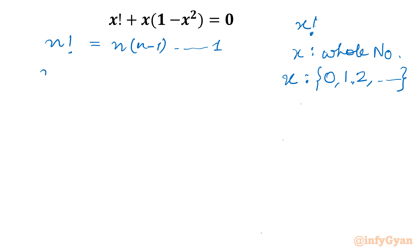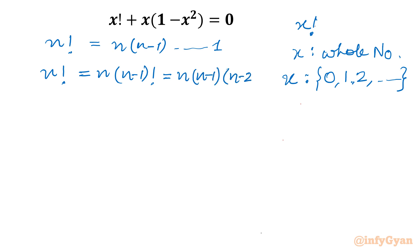Factorial notation means we multiply all the numbers from 1 up to that particular number — their product is called factorial. Now the recursive formula: n times (n minus 1) factorial, or n times (n minus 2) factorial. This is our recursive formula. So let's begin this problem by writing our equation. I will write x factorial and take minus outside, so: minus times x times (x squared minus 1) equal to 0.